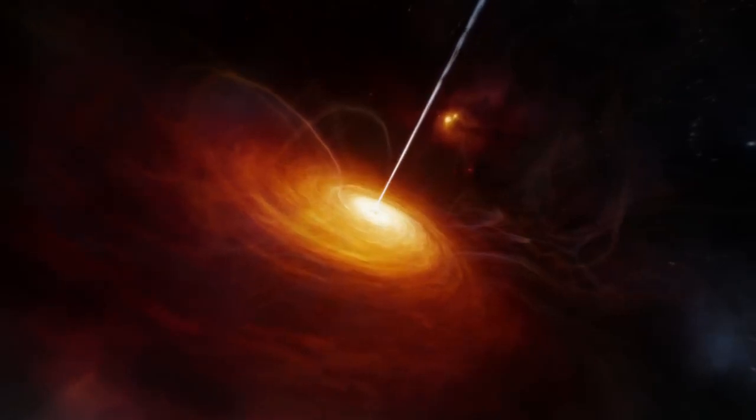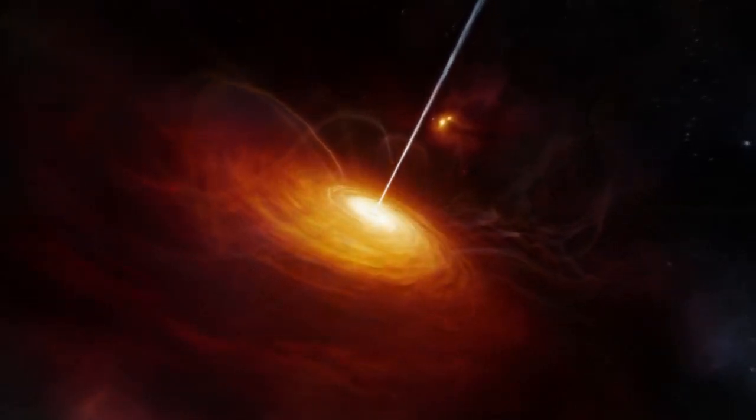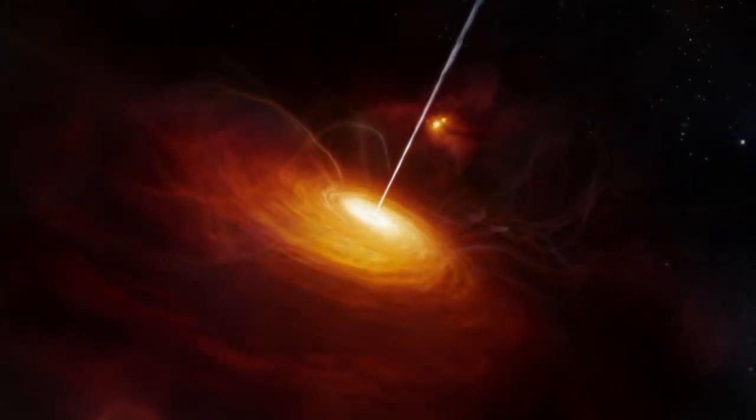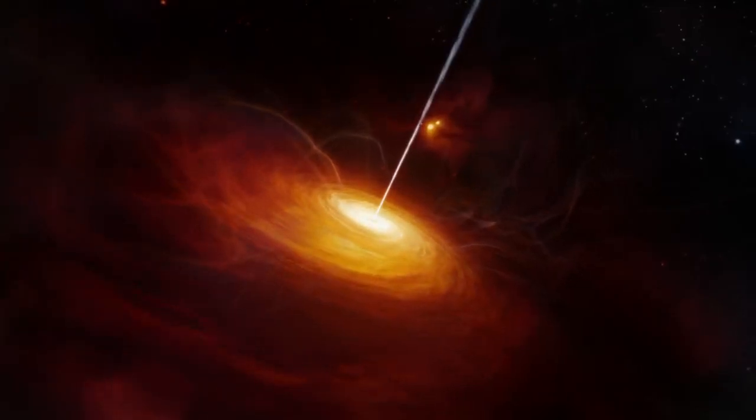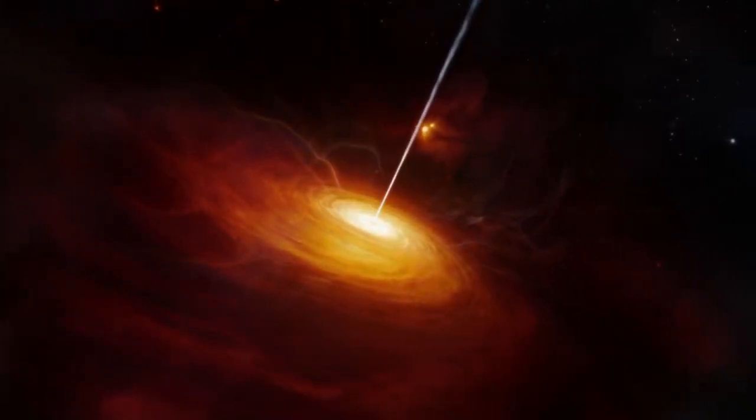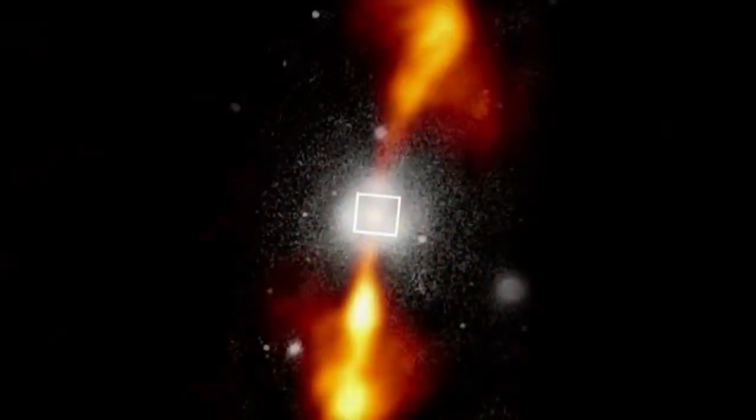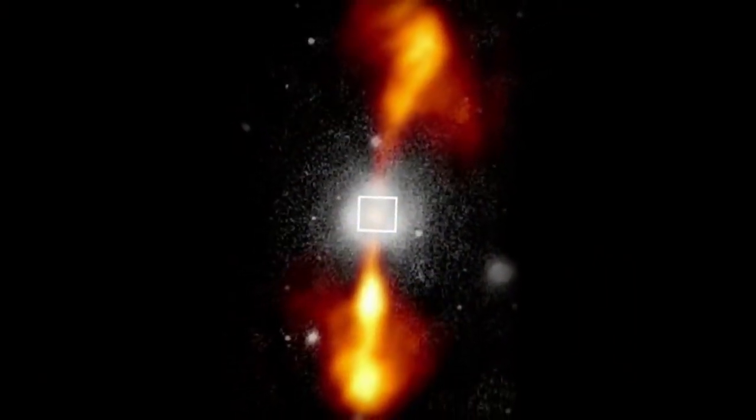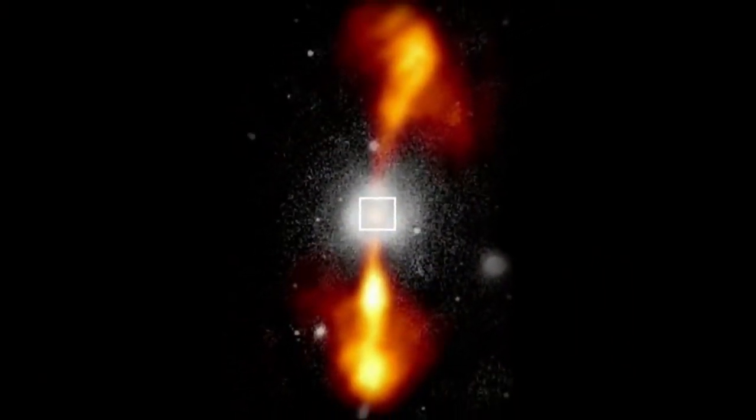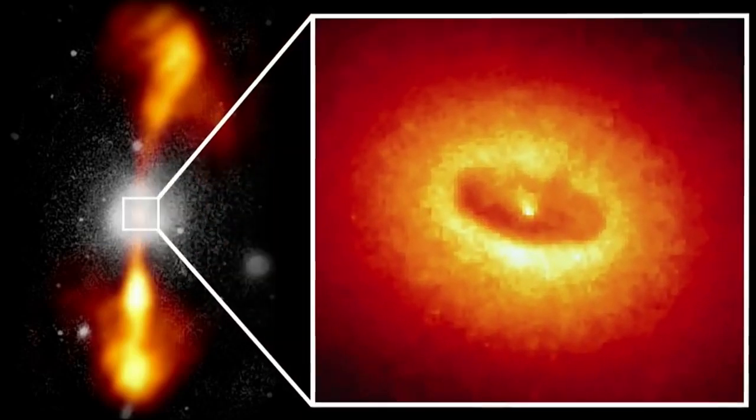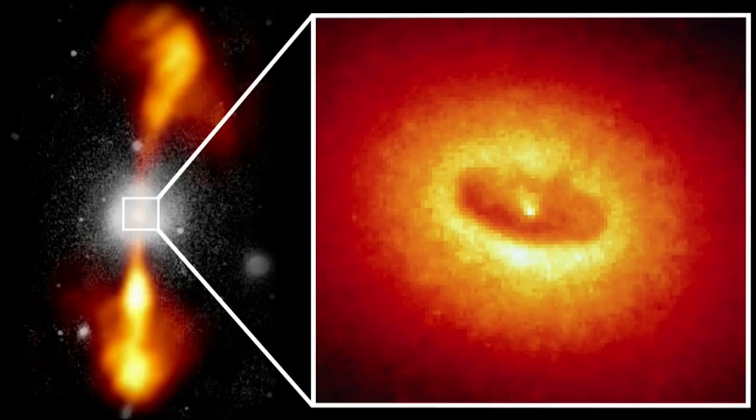The brightest and most active quasars are probably consuming matter at a high rate. In this Hubble image, we see a radio jet coming out of the center of a galaxy. Zooming in, we see the accretion disk and a dark central region.